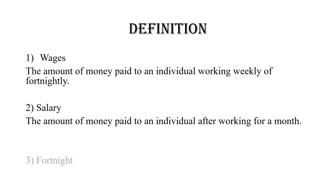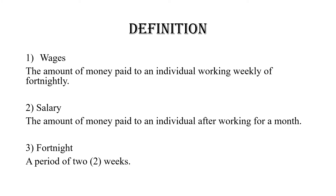A fortnight is a period of two weeks. It varies based on where you work — some count it as 14 days, some as low as 10 days, given that you don't work weekends. But generally, a fortnight is a period of two weeks, working whatever days are considered working days during those two weeks.